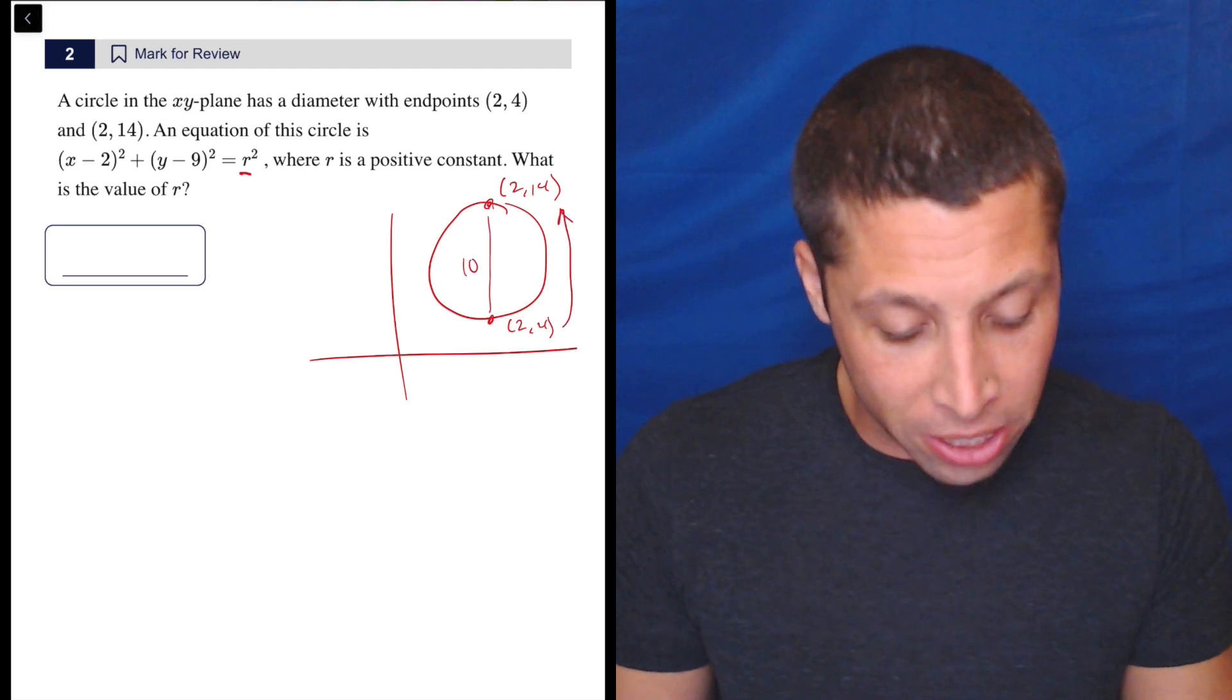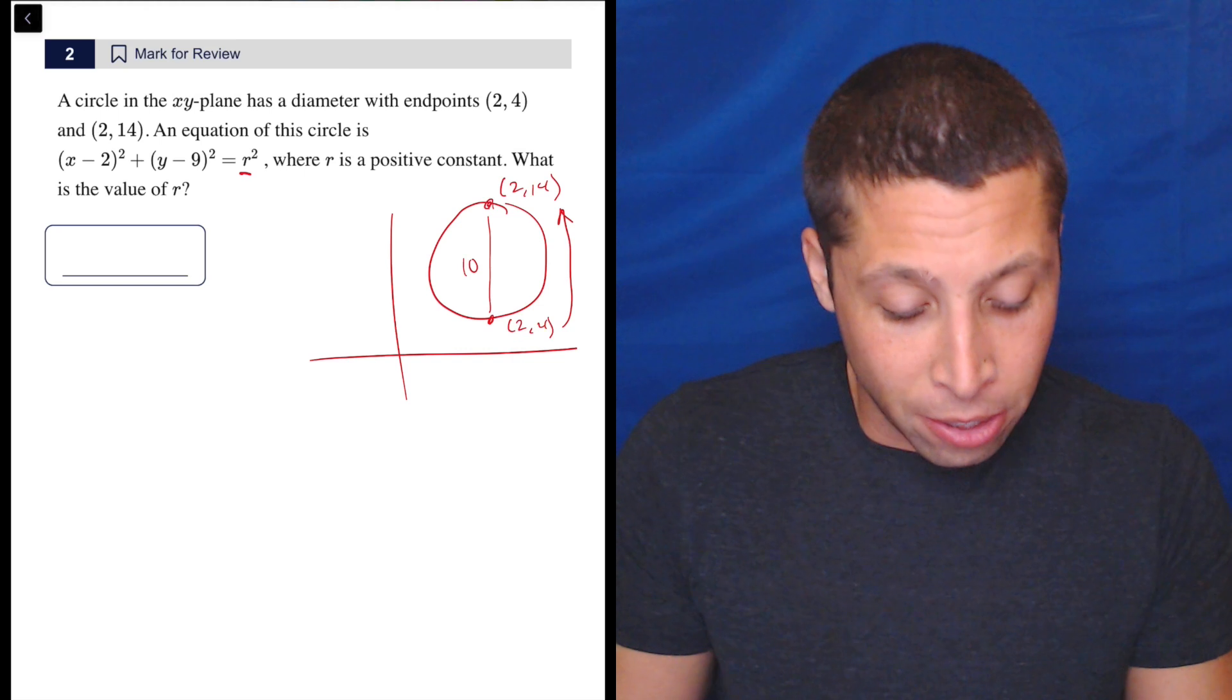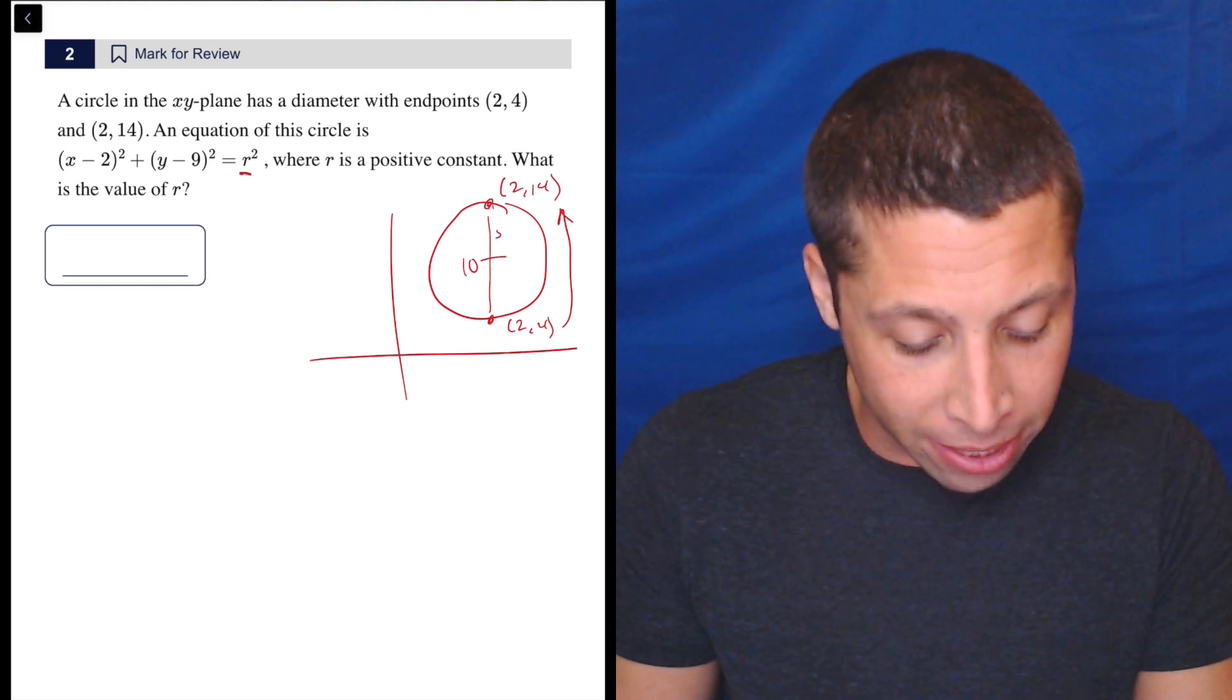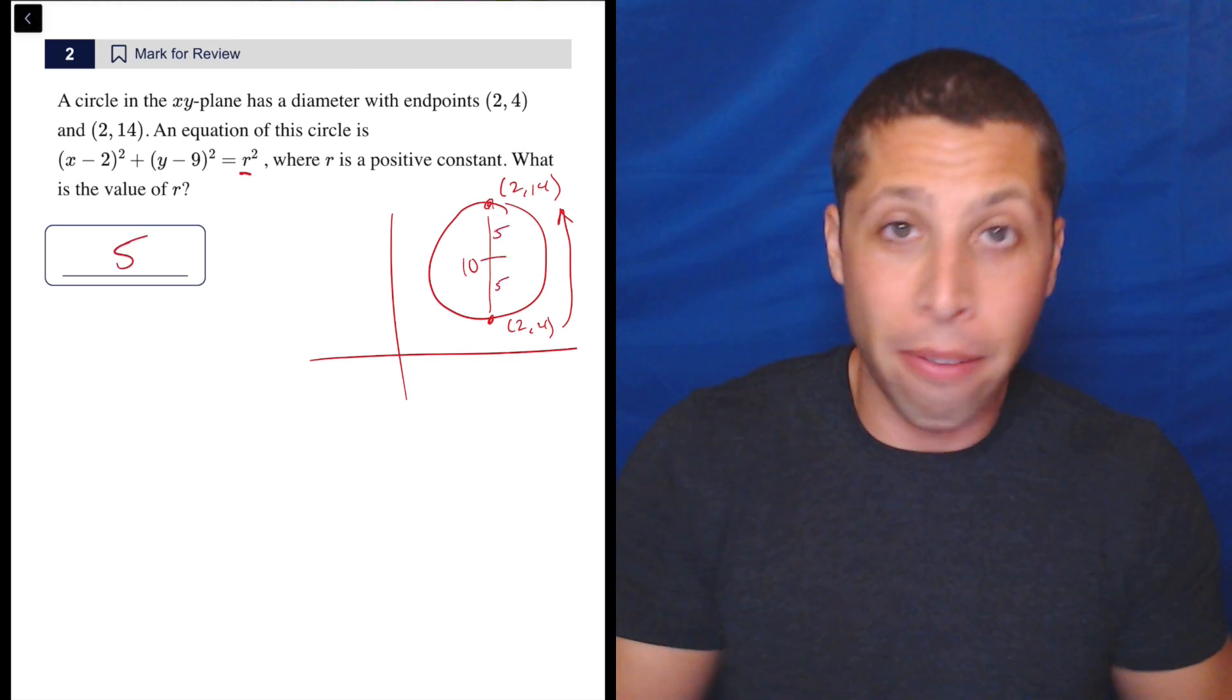We increased it by 10. So what's the radius? Well, half of that is the radius. That's 5 and 5. So there you go. The radius is 5. Done.